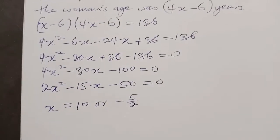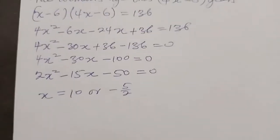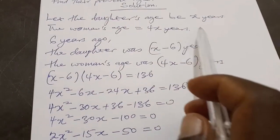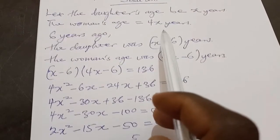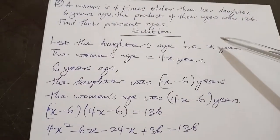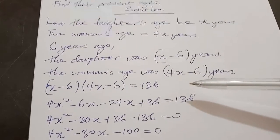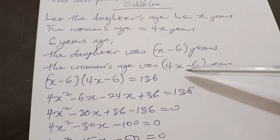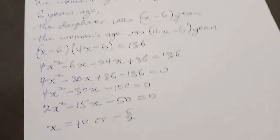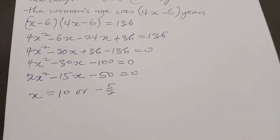We are talking about the ages of human beings, so we cannot have negative ages — we pick the positive one. If x equals 10, it means the daughter's age now is 10 years, and the woman's age now is 4 times 10, which is 40 years. Going back to check: six years ago the daughter was 4 years old, and the woman was 40 minus 6, which is 34 years old. Multiplying 34 times 4 gives 136, which confirms our answer. The woman is 40 years old and the daughter is 10 years old.